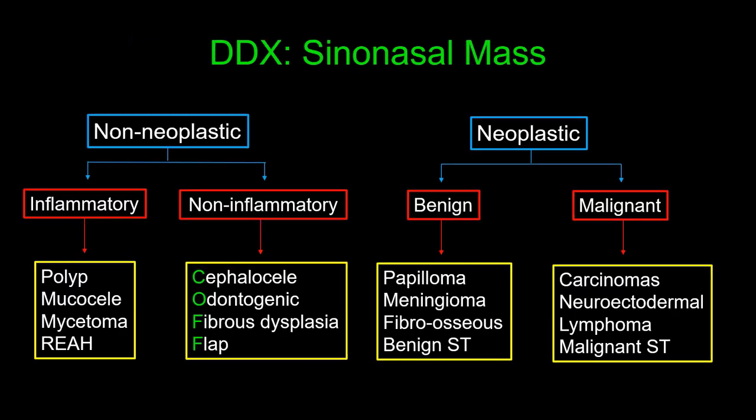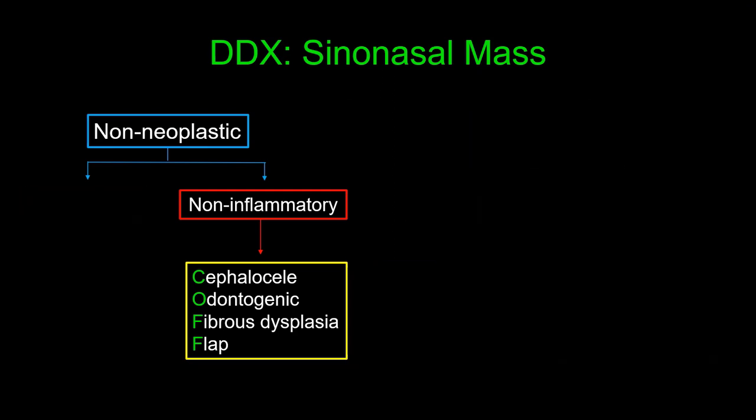Moving to the non-inflammatory non-neoplastic lesions, I have a mnemonic — COFF — to remind me to consider cephaloceles, odontogenic masses, fibrous dysplasia, and flaps. We already saw a cephalocele at the beginning of the talk. These represent herniation of intracranial contents through a skull base defect, and may be acquired (post-traumatic or iatrogenic following sinonasal surgery) or congenital. In each case, some component of the intracranial compartment has herniated through a skull base defect, presenting as a sinonasal mass.